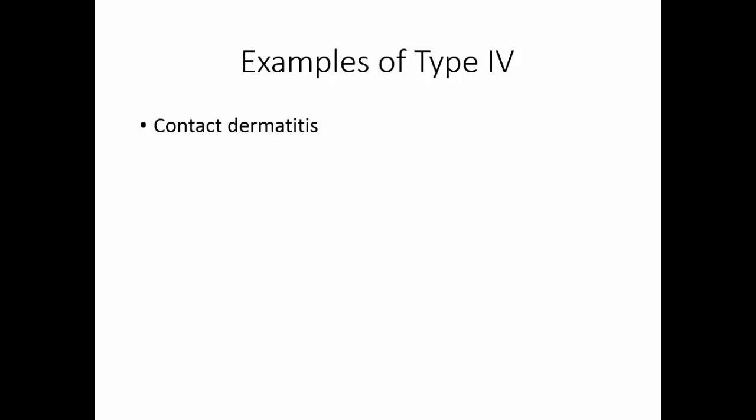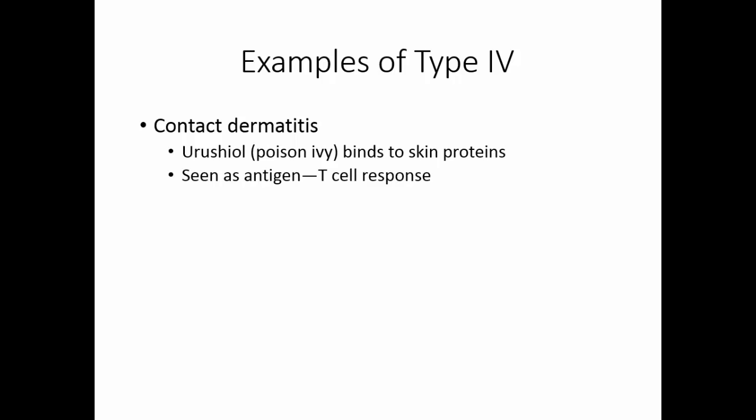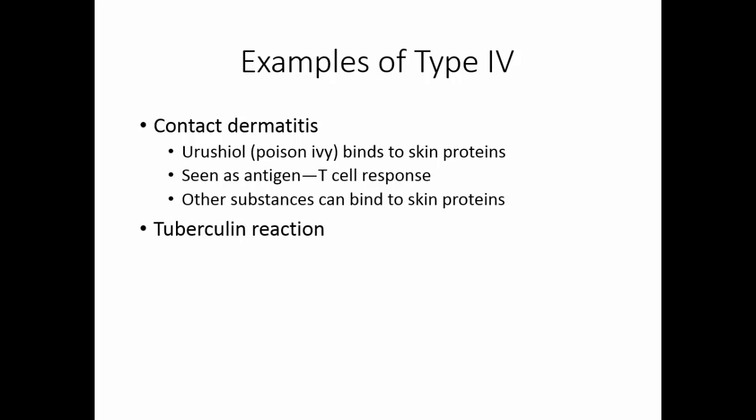As an example of contact dermatitis, we will use the response to poison ivy. Urushiol is the oil that comes from the poison ivy plant. This particular chemical is not large enough to be antigenic, but it can bind to skin proteins. Then it is seen as an antigen and the T cells respond to it. Other substances besides urushiol can bind to skin proteins and cause contact dermatitis. Some people develop contact dermatitis to various soaps, for example.